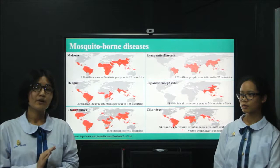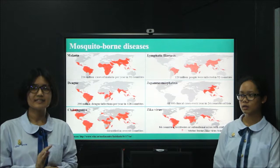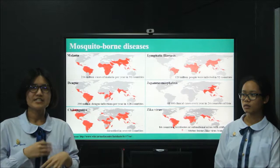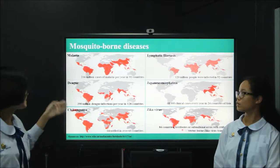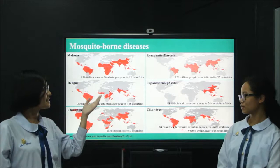The worst is malaria, which kills more than 600,000 people every year, and the fastest spreading disease is dengue. It threatens half of the world's population and causes spending of many millions of dollars for dengue treatment. Other diseases include Chikungunya, lymphatic filariasis, Japanese encephalitis, and Zika.